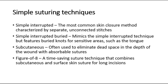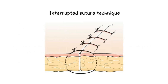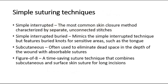Simple interrupted suture is the most common skin closure method, characterized by separate, unconnected stitches. This is a picture showing the interrupted suture technique. Simple interrupted buried suture mimics the simple interrupted technique, but features buried knots for sensitive areas, such as the tongue.